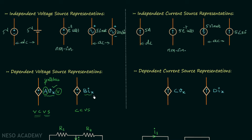The second dependent voltage source is a Current Controlled Voltage Source (CCVS), because the voltage equals B times Ix — current Ix is controlling the voltage. It is a voltage source because we have plus/minus inside the diamond structure. The quantity B has units of ohms, because B·Ix must have units of volts, and ohms multiplied by amperes gives volts.